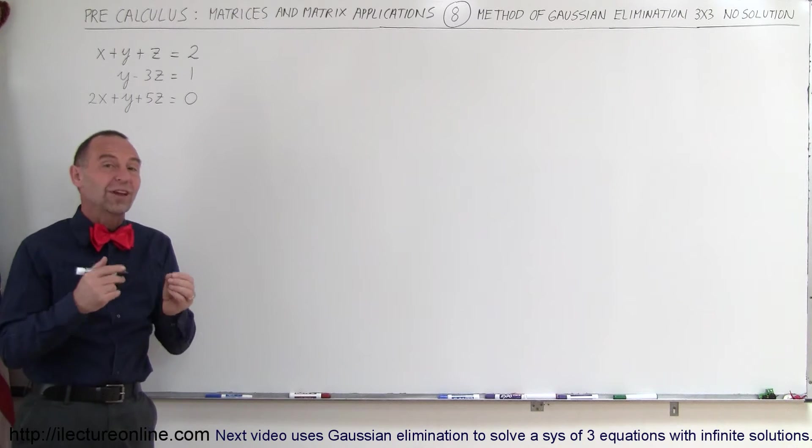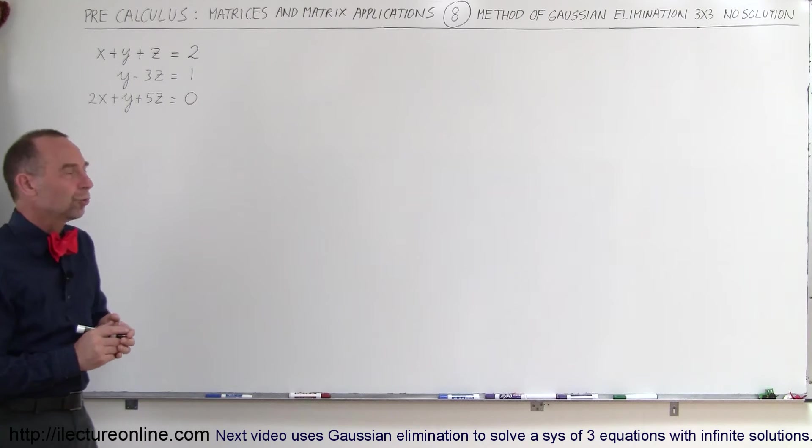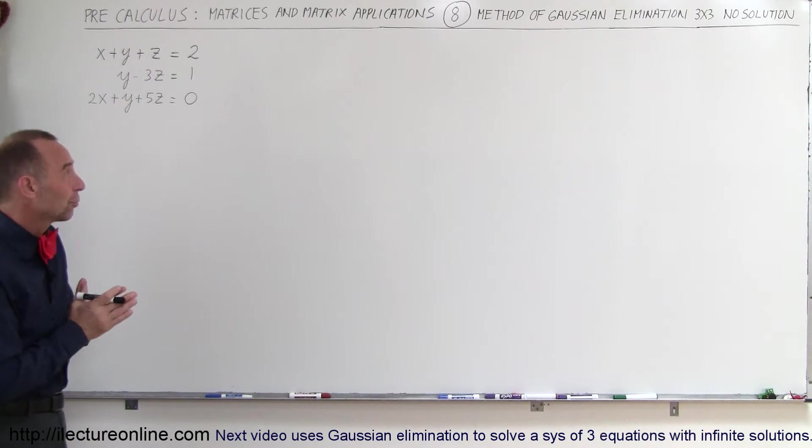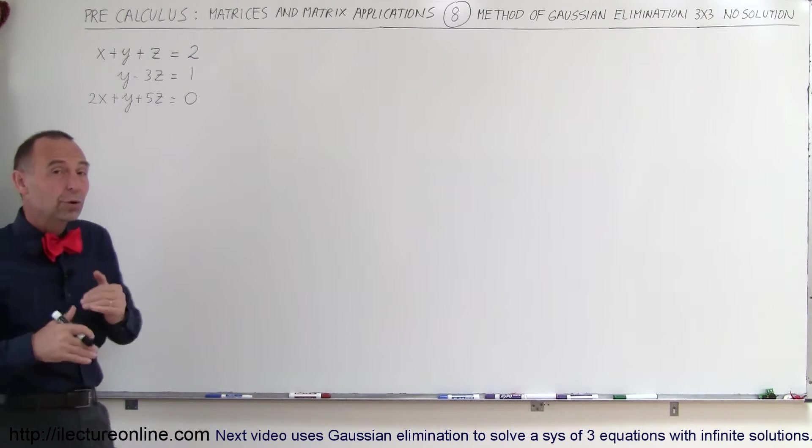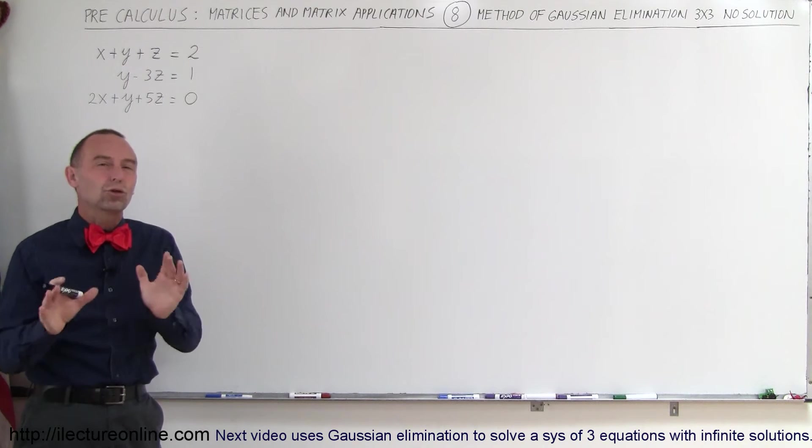In the previous video there was actually a solution and we found that solution. We found the value for x, y, and z that satisfied all three equations. But in this example, we're going to show you what happens when there's no solution.